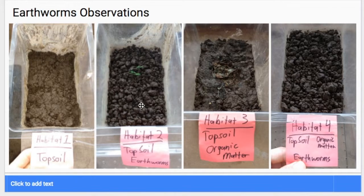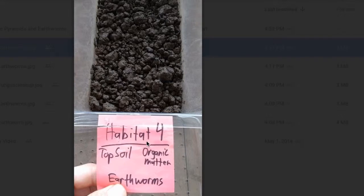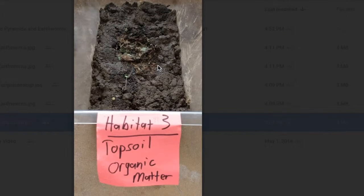Another comparison that you could make is between the two habitats that had organic matter. If we look closer at habitat three, one thing that you can see is that the organic matter is still there. Now compare that to habitat four and all the organic matter is gone. That is because of the earthworms. That would be my claim, that the earthworms digested all of the organic matter and mixed it back into the soil.